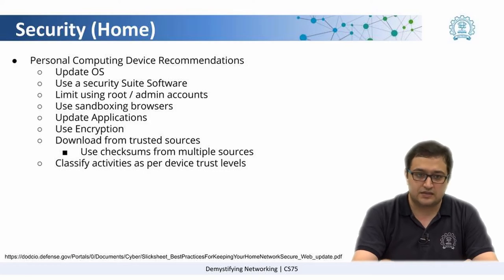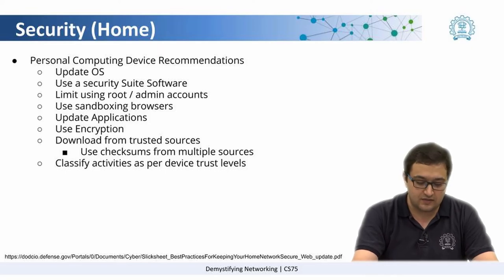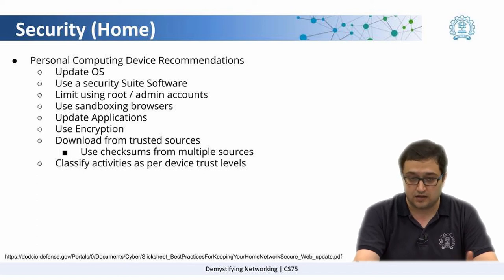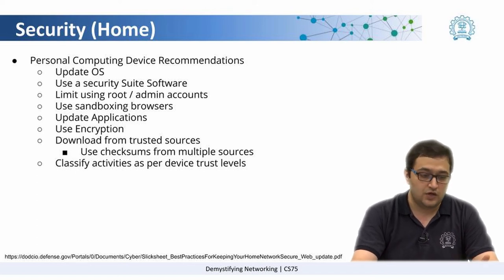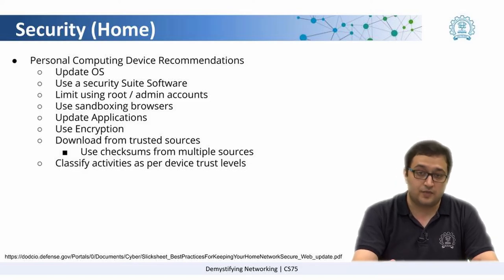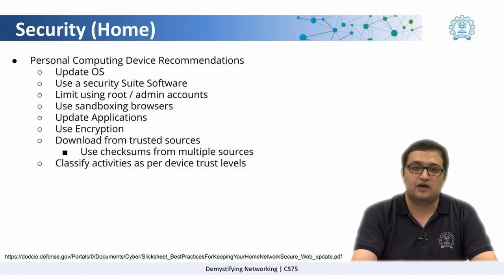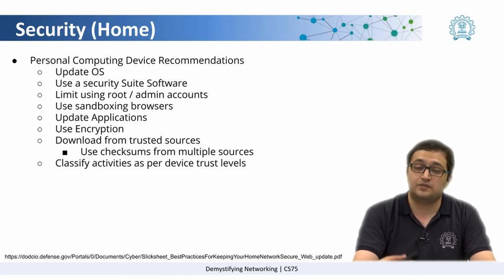The last point in this section is to classify activities as per device trust level. You have a lot of devices — say one device is used by your children in the house and some are used by you. Children are not that aware and they might visit websites which could compromise their systems. So try not to use those systems for financial transactions. Every device can have a different trust level based on who is using it and how aware that particular user is. You should know which applications or functions you should or should not perform on those devices.